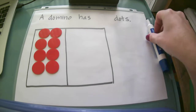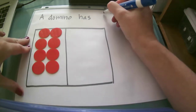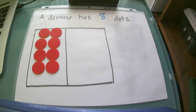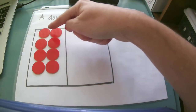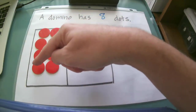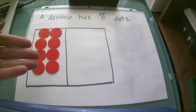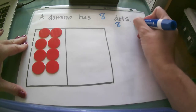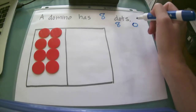So let's take a look at our problem here. If a domino has eight dots, what could that domino look like? I have eight counters here: one, two, three, four, five, six, seven, eight. One way a domino could look is have eight dots on one side and zero on the other. So number partners for eight could be eight and zero.